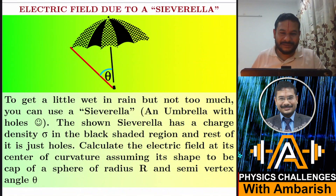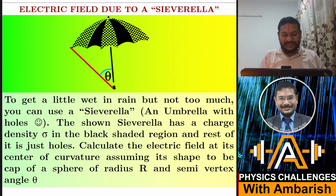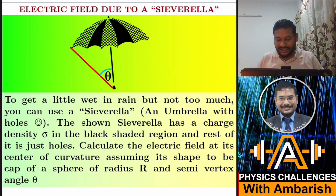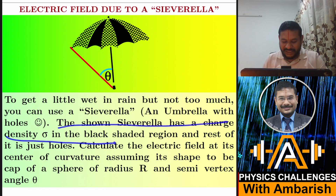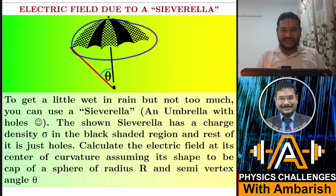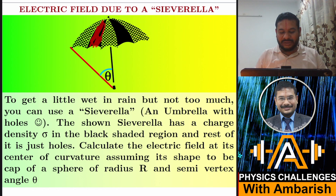So let's get straight into the problem. Electric field due to a civrella — to get a little wet in rain but not too much, you can use a civrella. It's an umbrella with holes. The shown civrella has a charge density sigma in the black shaded region. As you can see, this region is completely black shaded, so it has charge density sigma.